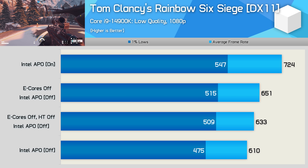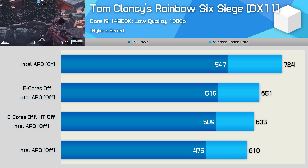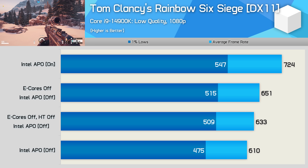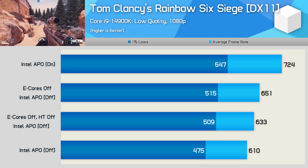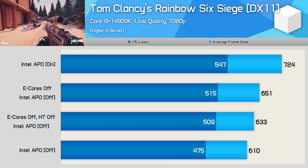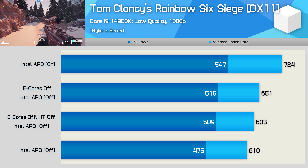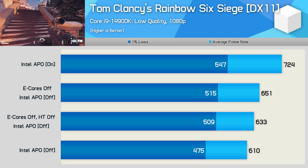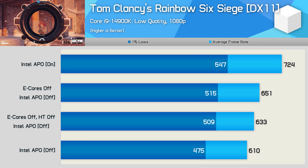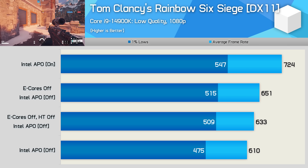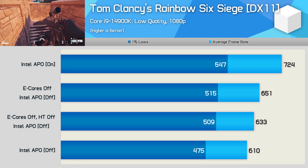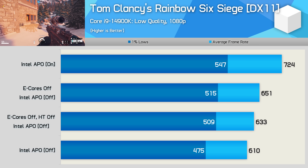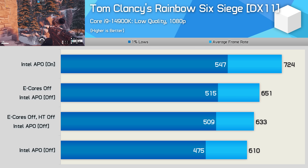Before trying to work out what APO is doing, I tried to brute force those FPS gains by disabling the E-Cores. With APO disabled, we saw 610 FPS on average. With E-Cores disabled along with hyper-threading, the frame rate increased by just 4% to 633 FPS. With E-Cores disabled but hyper-threading left active, the average reached 651 FPS — a 7% gain over stock. However, even with E-Cores disabled, we're still 10% slower than the APO configuration. And if you disable the E-Cores, APO can no longer be used, as the E-Cores are an integral part of the APO feature.